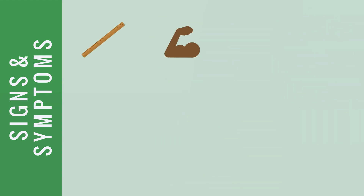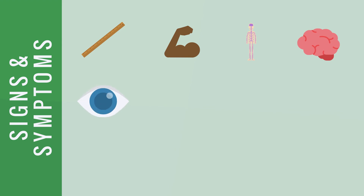Some common signs and symptoms include poor growth, muscle weakness, atrophy or pain, neurological problems including seizures, learning disabilities or developmental delays, vision or hearing problems, respiratory issues, and heart, liver, or kidney disease.